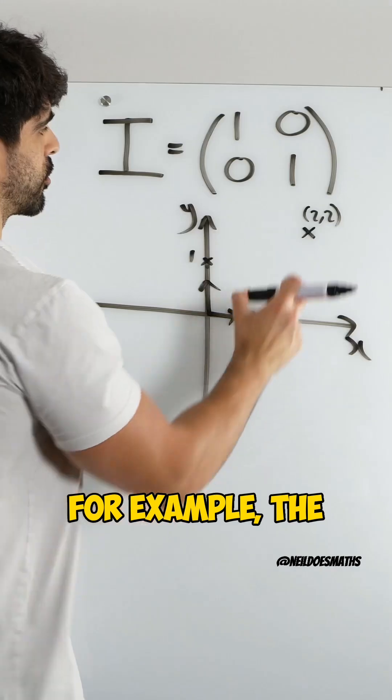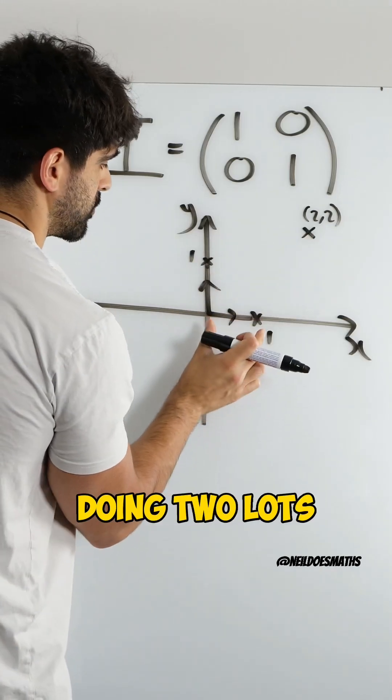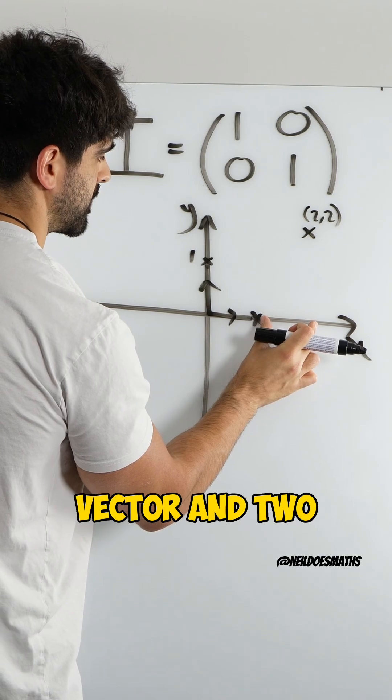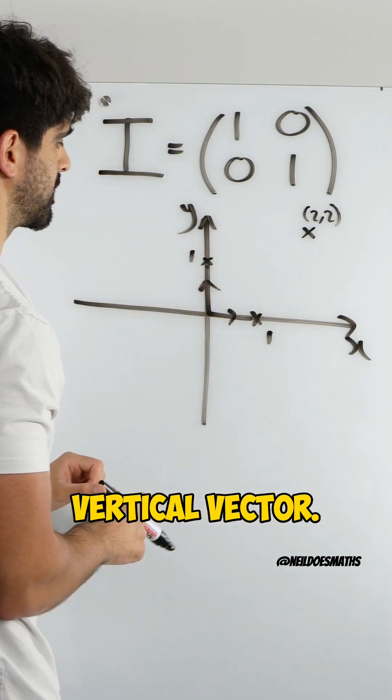For example, the coordinate, you'd be doing two lots of this horizontal vector and two lots of this vertical vector.